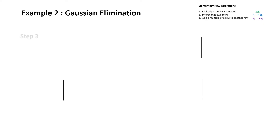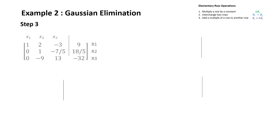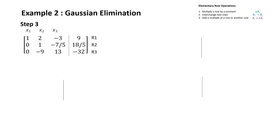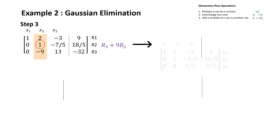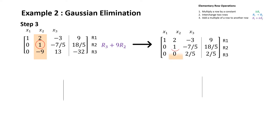Next we want to transform the matrix to obtain a 0 in all the entries that are below the leading entry 1 in this column. In order to do this we are going to add a multiple of a row to another row. This operation leads to the matrix on the right, and there is a sample calculation shown.